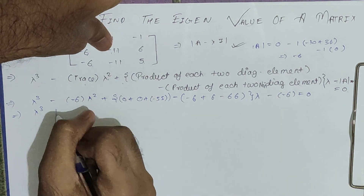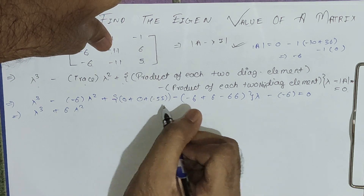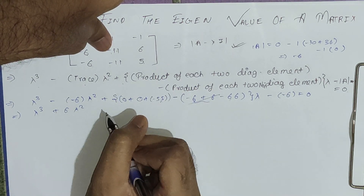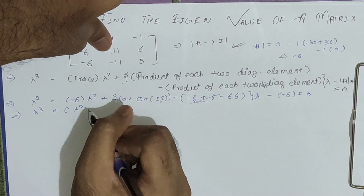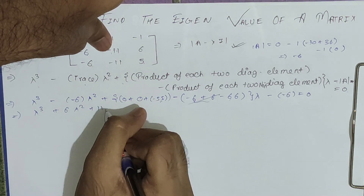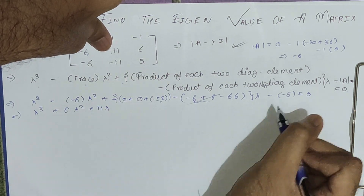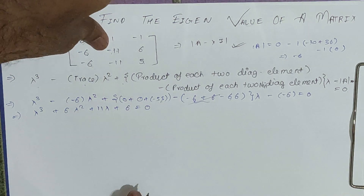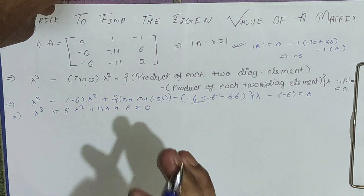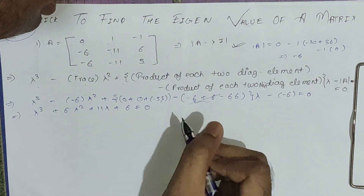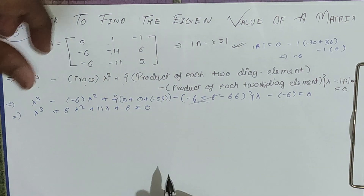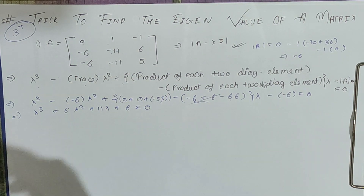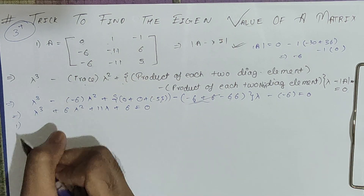Resolving everything, we get: lambda cubed plus 6 lambda squared plus 11 lambda plus 6 equals zero. This is a cubic equation, so we will get three roots — basically three eigenvalues.